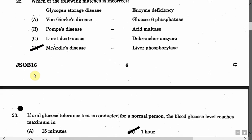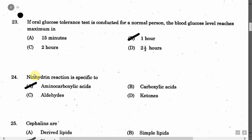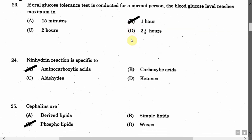The next question is: If an oral glucose tolerance test is conducted for a normal person, the blood glucose level reaches maximum in — Option A: 15 minutes. Option B: One hour. Option C: Two hours. Option D: Two and a half hours. The correct answer is Option B, that is one hour.